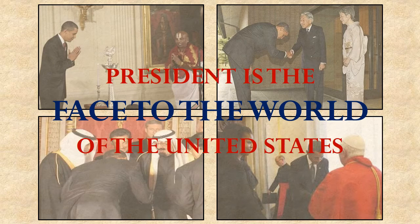In these functions, the President can present a particular face to the world — in other words, try to make other countries and people of Earth see the United States in a certain way. A very obvious example of a President trying to help the world see the United States in a certain way is President Obama's demeanor in his many visits around the world. Here are four photos showing the President, in one way or another, bowing to dignitaries from other places in the world.